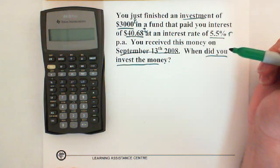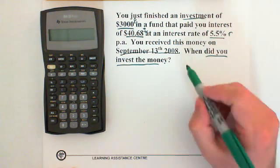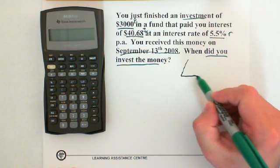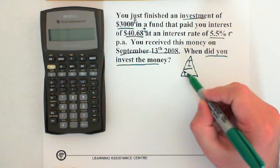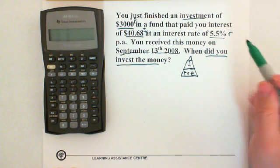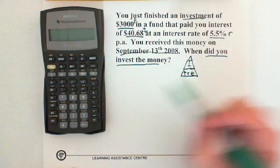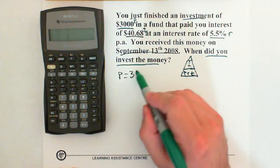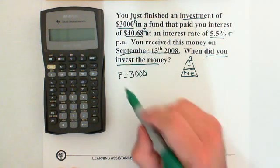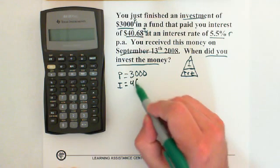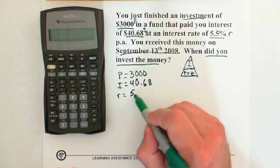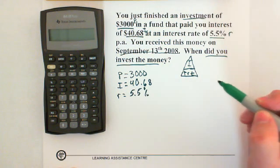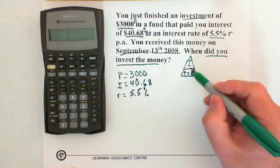When did you invest the money? So then if we make our little triangle with I on top, P, R, T on the bottom, we have P $3,000, we have I $40.68, and we have R 5.5%. So what's missing is the T.